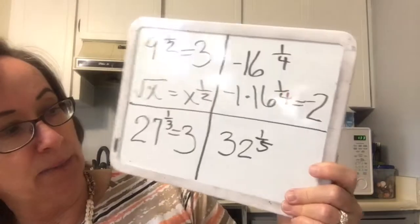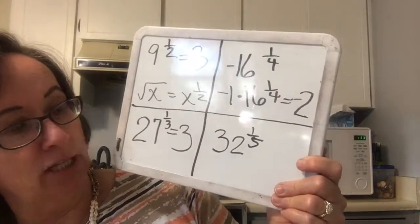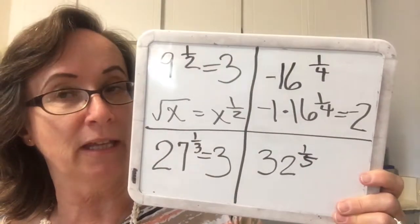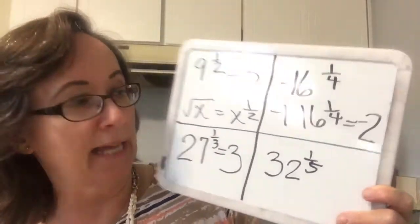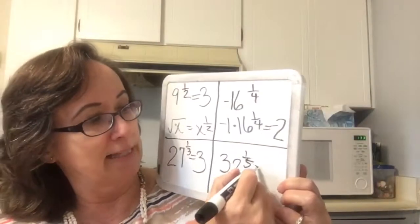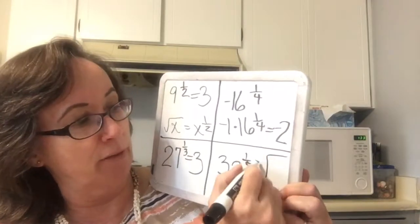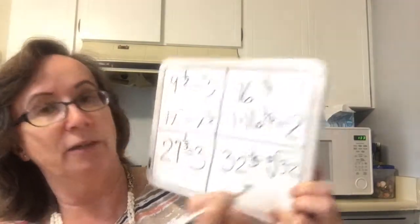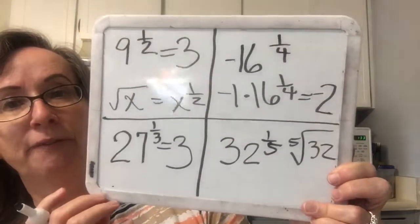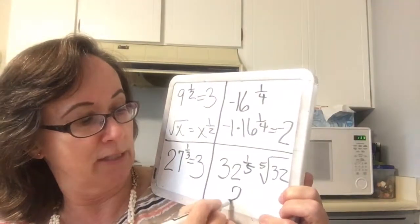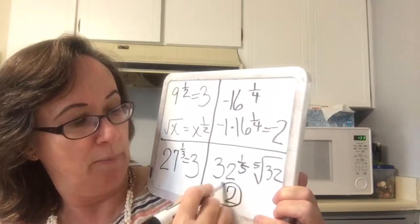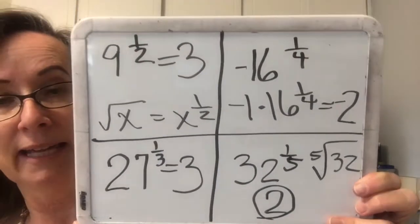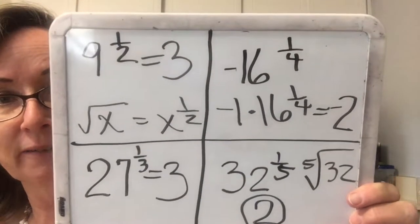The last one on this page is 32 to the 1/5, which is the same thing as the fifth root of 32, and the fifth root of 32 is 2, because 2 to the fifth power is 32.